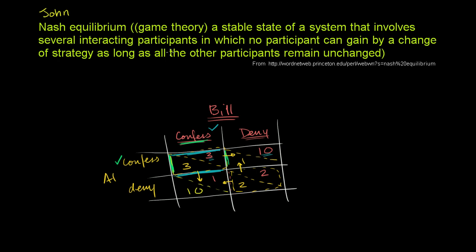Here's a definition of Nash equilibrium from Princeton — a good place to get the definition because that's where John Nash spent a good bit of his career. It is defined as a stable state of a system that involves several interacting participants — in our prisoner's dilemma we had two participants — in which no participant can gain by a change of strategy as long as all the other participants remain unchanged.